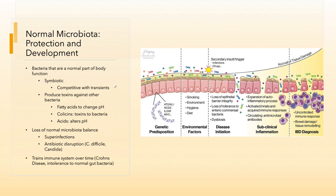These symbionts can be competitive with the transients. They produce toxins against other bacteria. They can do things like break down lipids to produce fatty acids. They produce toxins to change pH. E. coli produces a class of toxins called colicins. These are produced in the colon and they are toxic to other non-colon-bearing bacteria. They can produce acids to alter the pH and make an environment extremely acidic. Some organisms can survive in those environments and others cannot.